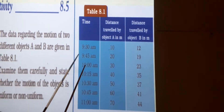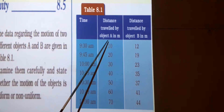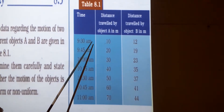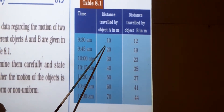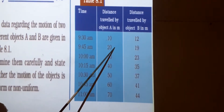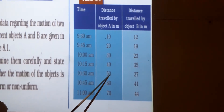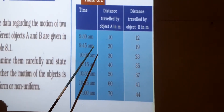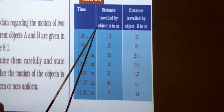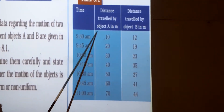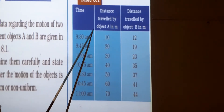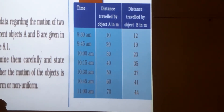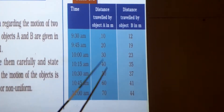So what kind of motion is this object performing? According to the definition of uniform motion, equal distances are being covered in equal intervals of time. So this object A is performing uniform motion.